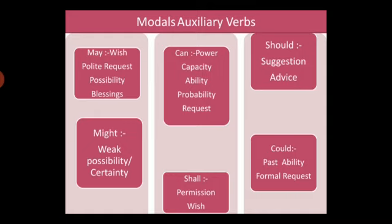The modal verb 'may' is used to denote wish — 'May I be successful'; polite request — 'May I come in, ma'am'; possibility — 'It may rain today'; and blessings — 'May you live long', 'May he be successful'. 'Might' denotes weak possibility. If we say 'It may rain today', there is a possibility of rain. But if we say 'It might rain today', the modal verb 'might' denotes weaker possibility than 'may'.